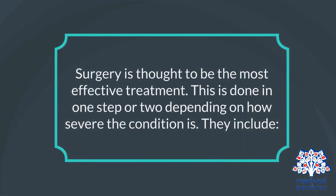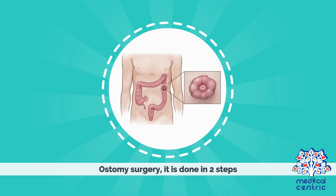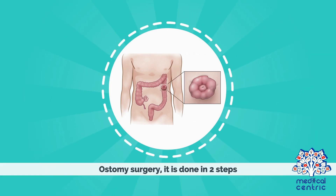Surgery is thought to be the most effective treatment, done in one step or two depending on how severe the condition is. Pull-through surgery involves the doctor cutting out the part of the large intestine with the missing nerve cells, then attaching the rest of the intestine directly to the anus.